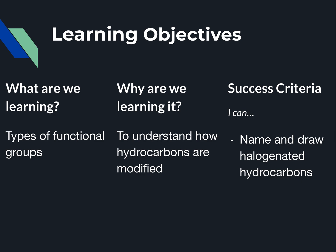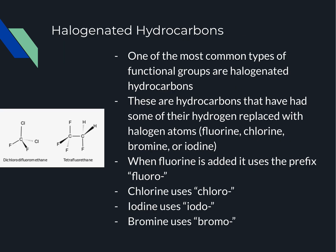We're going to start talking about functional groups, which are modifications we can make to hydrocarbons. Our success criteria is being able to name and draw halogenated hydrocarbons. A halogenated hydrocarbon is a chemical like these chlorofluorocarbons on the side, where you have a hydrocarbon as the base and then you have replaced some of the hydrogens with halogens. These are among the most common functional groups in organic chemistry.